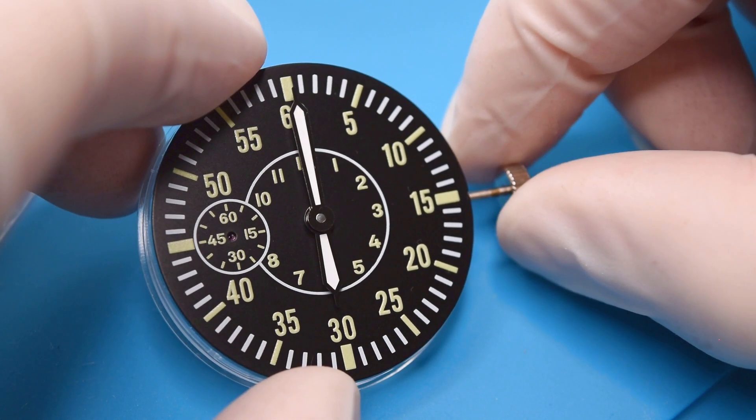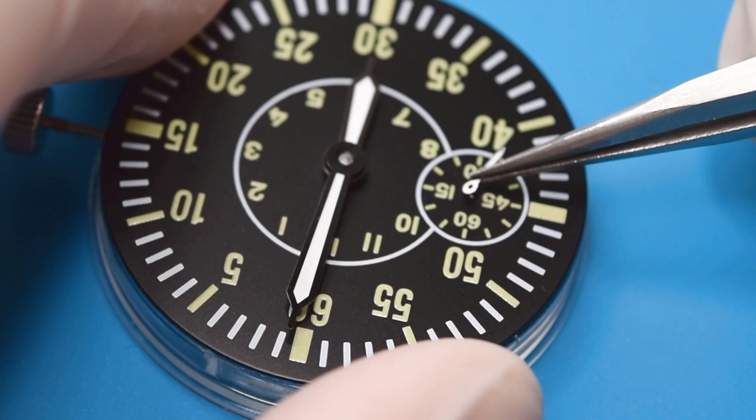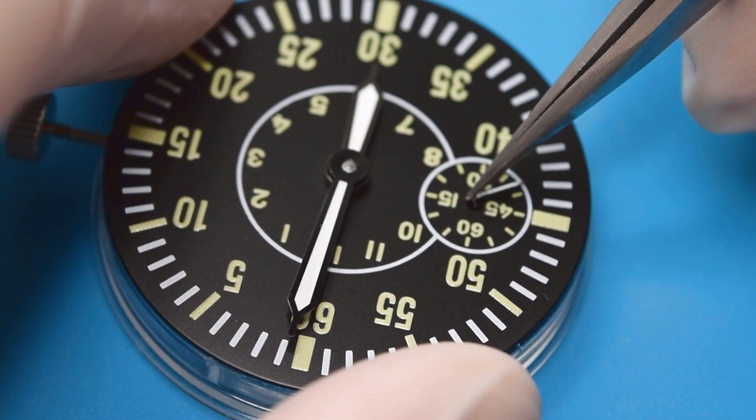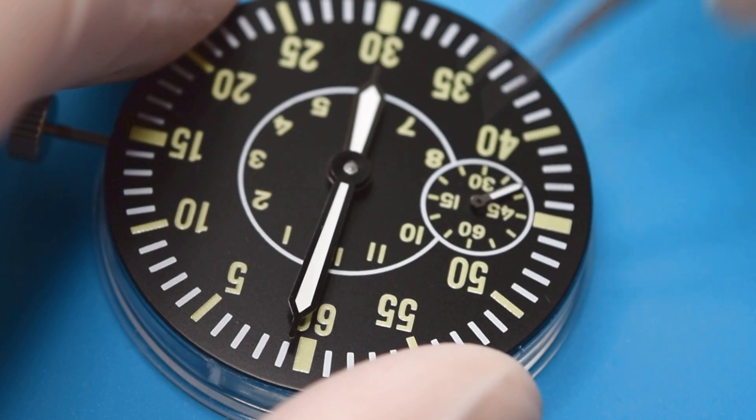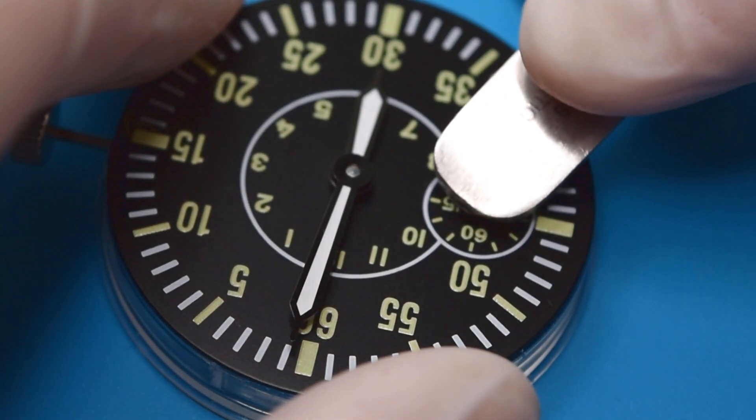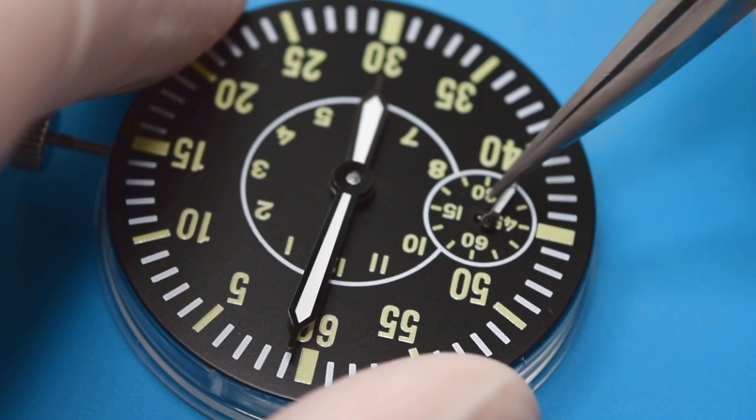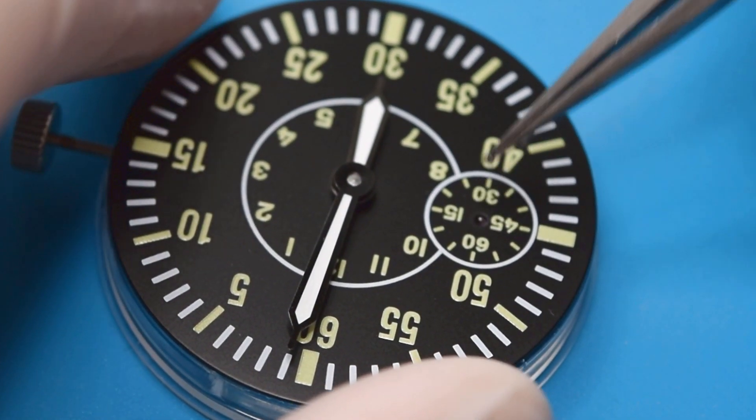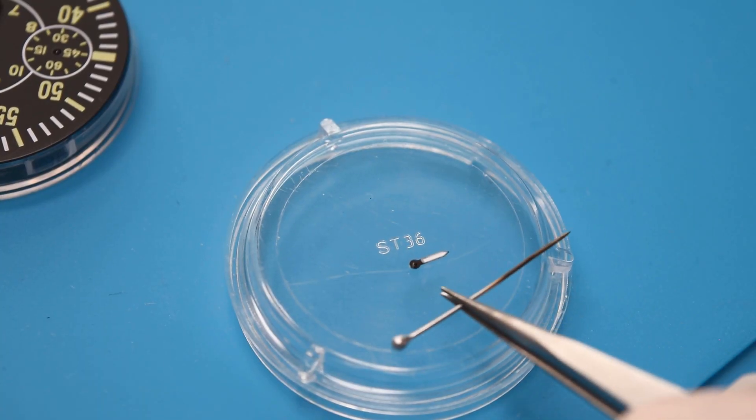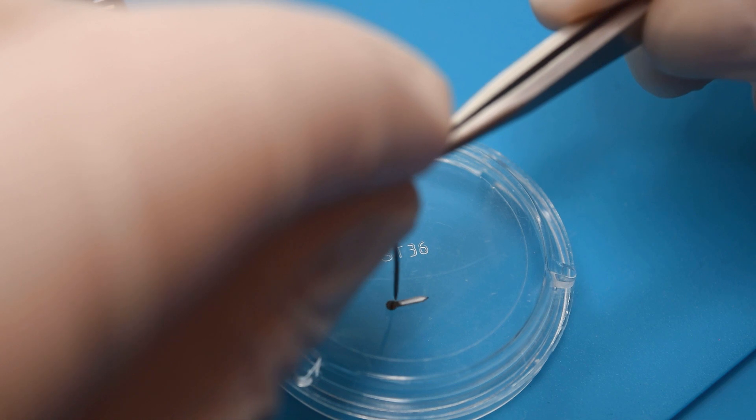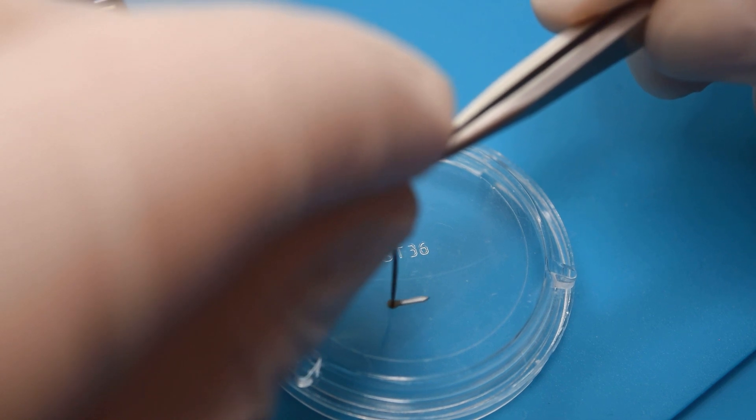So far so good. Now the second hand and here is a little bit tricky. Because in most cases I spoke about it in my previous video when I was building a custom dress watch, that this tube is always a little bit too small and using a needle like this, I will just make it a little bit bigger. And this is how I'm doing this.